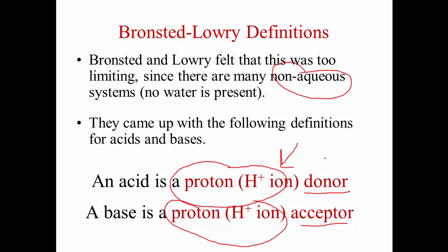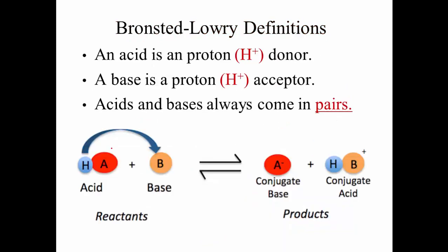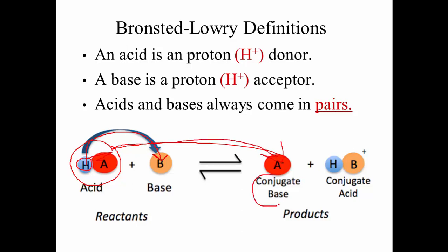You cannot have an acid without a base, and you can't have a base without an acid. If you're looking at a typical acid — using A and B — you've got the hydrogen ion attached to some anion, and that hydrogen ion is transferred over to the base, making the base a proton acceptor. Once the acid has lost that hydrogen, it forms what we call its conjugate base, and the base, by taking that proton, forms a conjugate acid. Acids are proton donors, bases are proton acceptors, and they always come in pairs, forming conjugate acids and bases after the transfer.